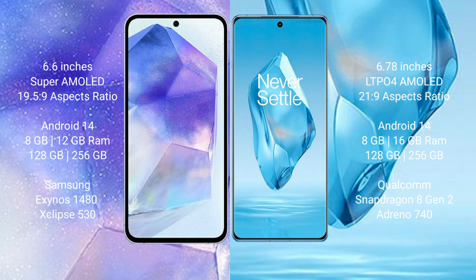Samsung Galaxy A55 runs on the Android 14 operating system. OnePlus 12R also runs on Android 14. Samsung Galaxy A55 comes with 8GB and 12GB RAM options, 128GB and 256GB internal storage, Samsung Exynos 1480 chipset processor, and GPU Xclipse 513.